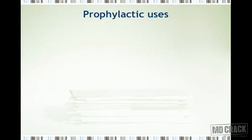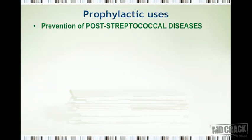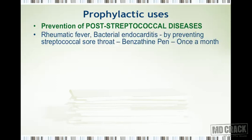The prophylactic uses of penicillins are extremely important. We can use penicillins to prevent post-streptococcal diseases. What we prevent is the streptococcal infection, and because these illnesses are supposed to be post-streptococcal, you can aim at preventing them. This includes rheumatic fever and bacterial endocarditis, by preventing streptococcal sore throat. Benzathine penicillin — one injection acts for one month — is extremely useful for this.